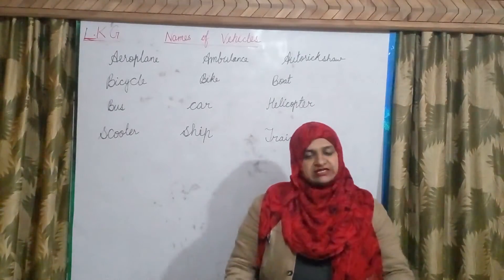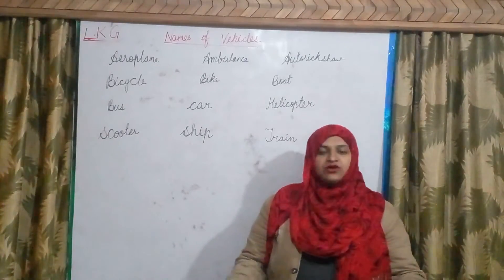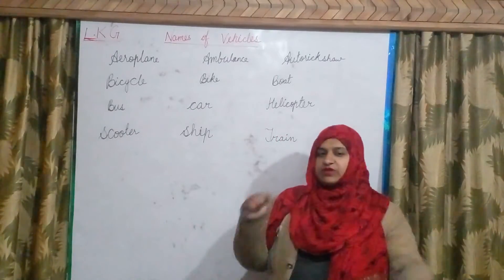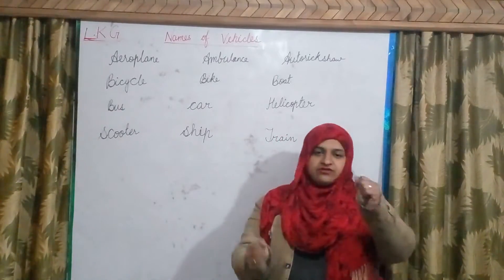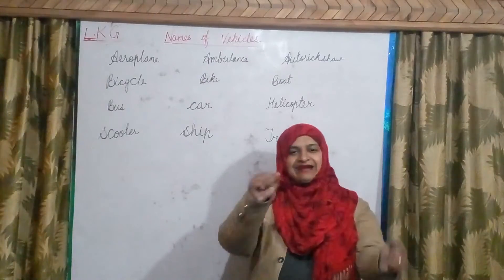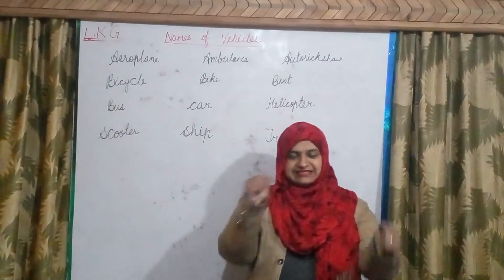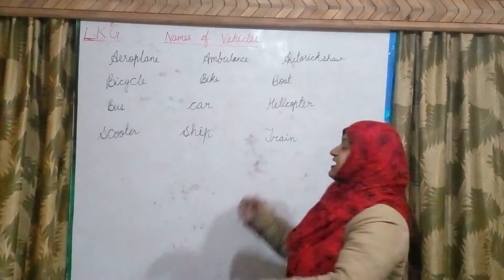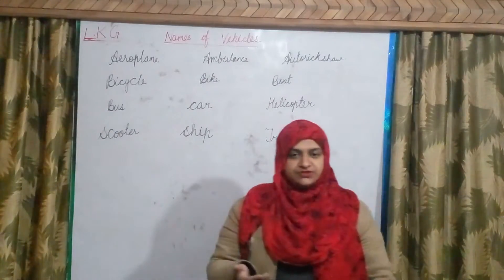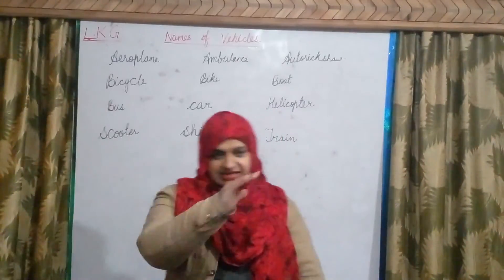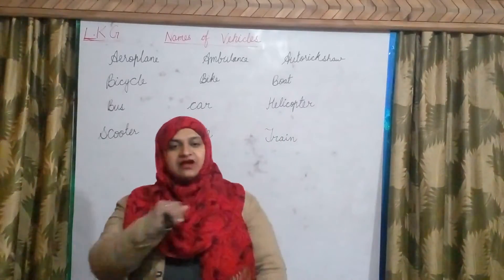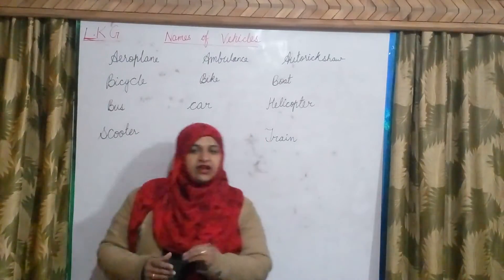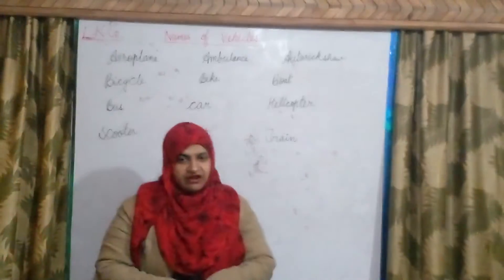Now next is car. Car is a four-wheeler — there are four wheels in a car. It's also a road transport, it runs on road. How do we drive a car? Like this. So, car.